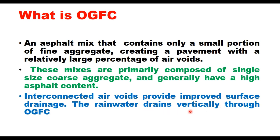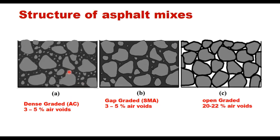The rainwater drains vertically through OGFC. There are three types of asphalt mix structures: dense graded, gap graded, and open graded. A dense-graded structure is a well-graded HMA intended for general use and is almost impermeable. The goal of gap-graded mix is to create stone-on-stone contact — for example, stone matrix asphalt, which maximizes rutting resistance and durability. The open-graded mix is designed to be water permeable, with a minimum air voids of 15% and no maximum limit.